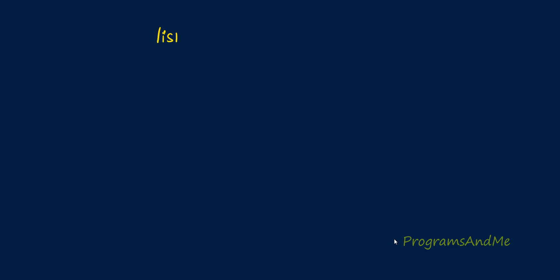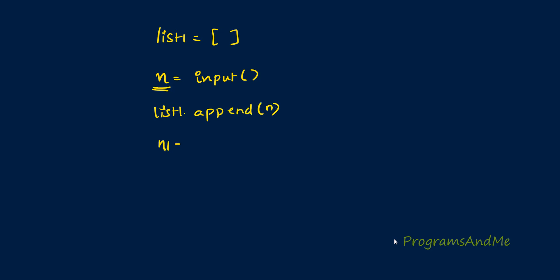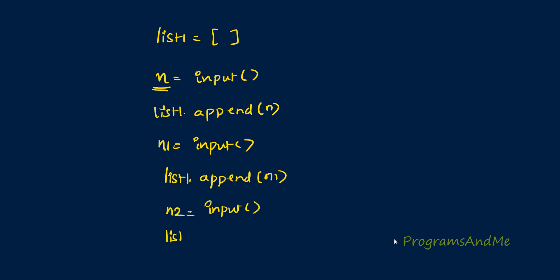A list can contain zero or more elements. So if I want to take user input for a list, first you need to take an empty list, then take input from the user using the input function, then append that input to list1 using append. If you want to add another element, you take input again and append it. This is one way, but it is not the best way because if I want 10 inputs then I need to write these two lines 10 times.